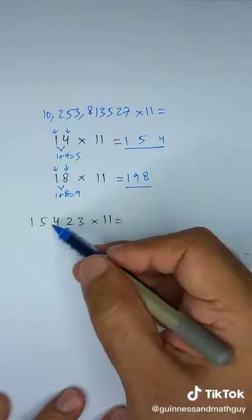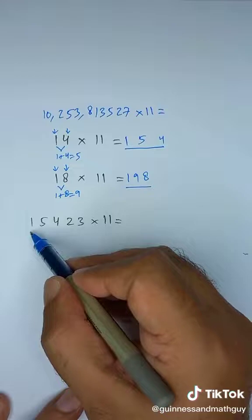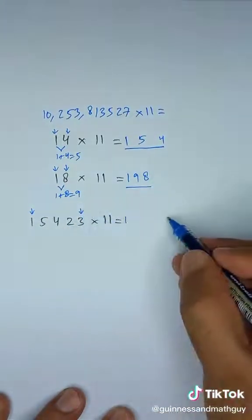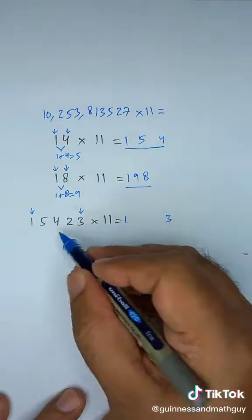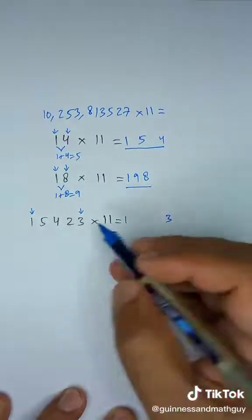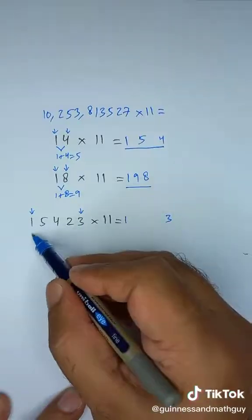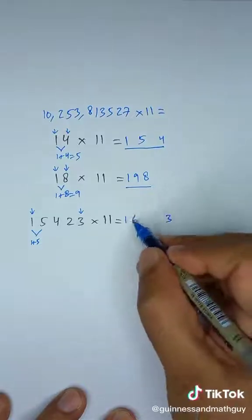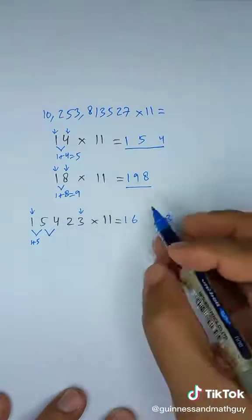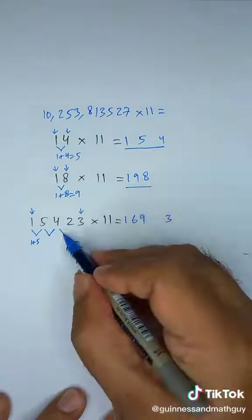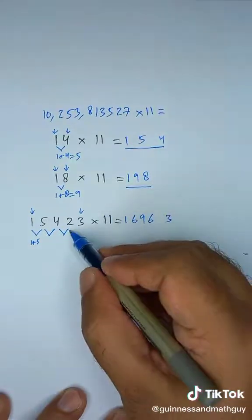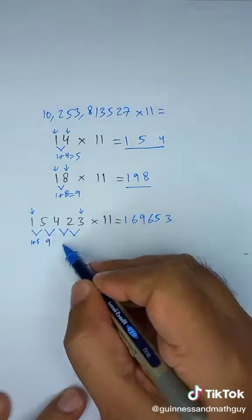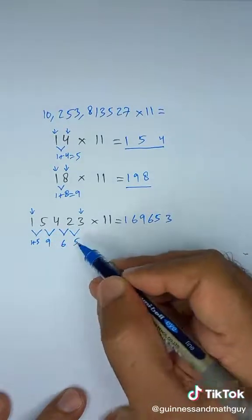Now, what if the number is bigger than this? You do the same thing. Write the first number, then write the last number. But we have to do some adding of two digits a couple of times. So we add these two: 1 plus 5 is 6. Then 5 plus 4 is 9. Then 4 plus 2 is 6. Then 2 plus 3 is 5. So this is 9, this is 6, this is 5.